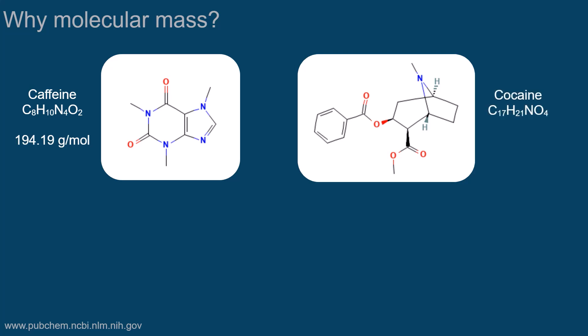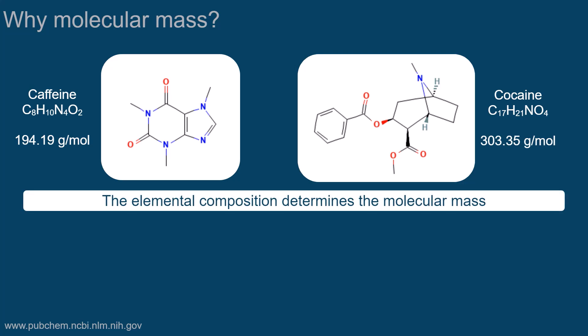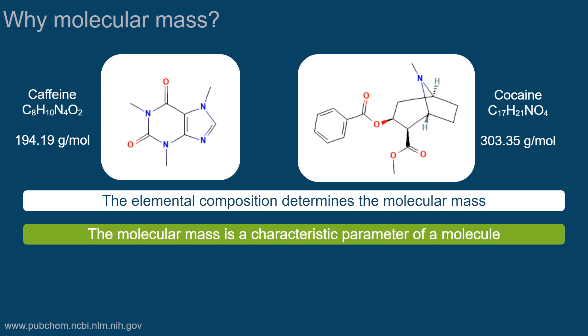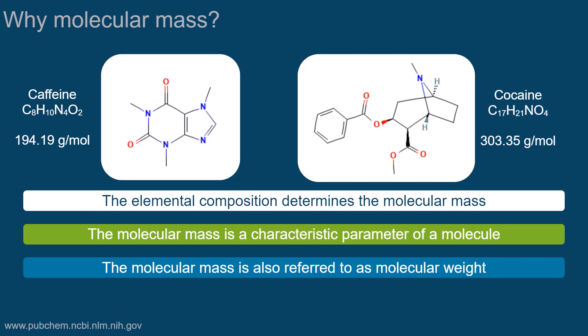Cocaine has a different elemental composition, resulting in a different molecular mass of 303.35 grams per mole. The elemental composition thus determines the molecular mass, and is therefore a characteristic parameter of a molecule. The molecular mass is sometimes also referred to as molecular weight of a compound.